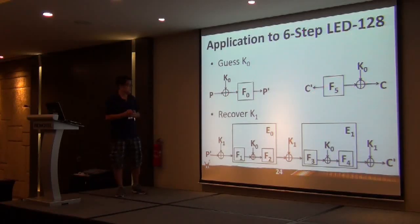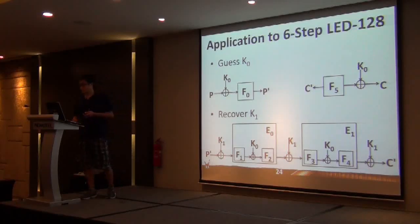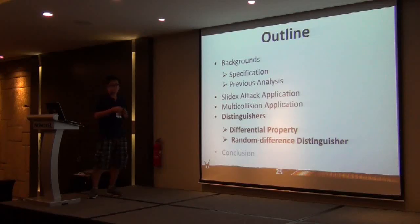How do we apply this to 6-step LED-128? First, the same we guess K0. It will help us peel off F0 to F5. The remaining part, when we compute this part because we know everything and we get K0, we denote it as E0. The later part we denote as E1. This is exactly single-key two-stack even model C0, so we can use just that observation to recover K1 faster. This is the attack, and we'd like to mention that actually this attack is independent of the step function specification. For any step function, this attack can be applied.